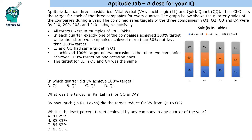Every quarter they are given some target, and we do not know what the target of each company is — we are given the sales that they achieved. We are given the total target of these three companies. We will have to figure out the target given to each company in the four quarters, using the given information. The first condition is: all targets were in multiples of rupees 5 lakhs, so the targets will also be in multiples of 5 lakhs.